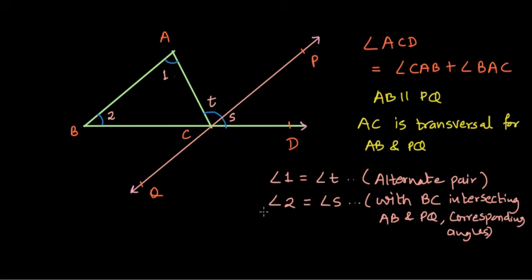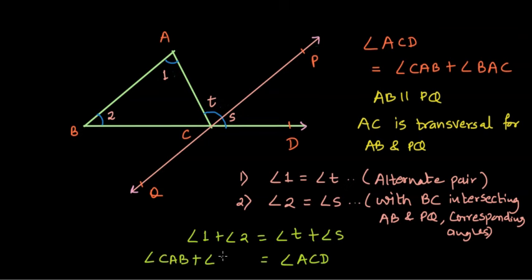And now because these two are equal, let's say this is equation one and this is equation two. We can add equation one and two. So angle one plus angle two is equal to angle T plus angle S. Angle T and angle S is nothing but angle ACD, and angle one plus angle two can be written as angle CAB plus angle CBA. And so we just proved that measure of exterior angle of a triangle is equal to the two other interior angles of the triangle.